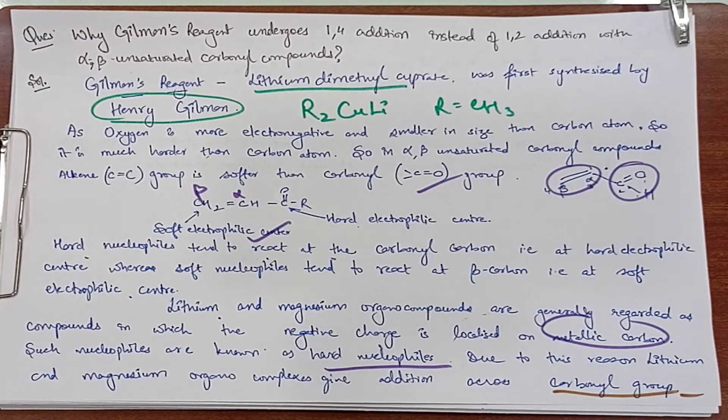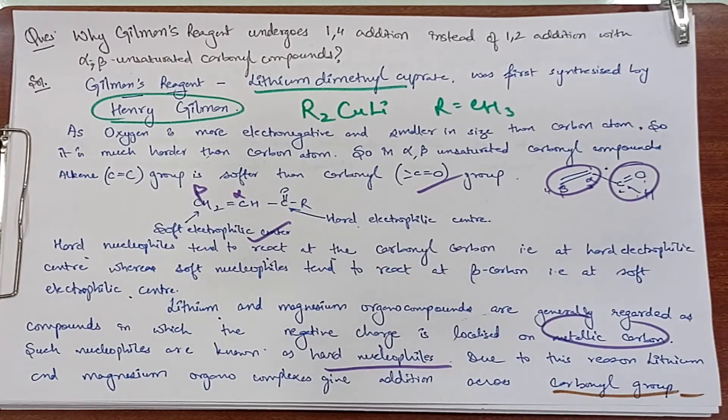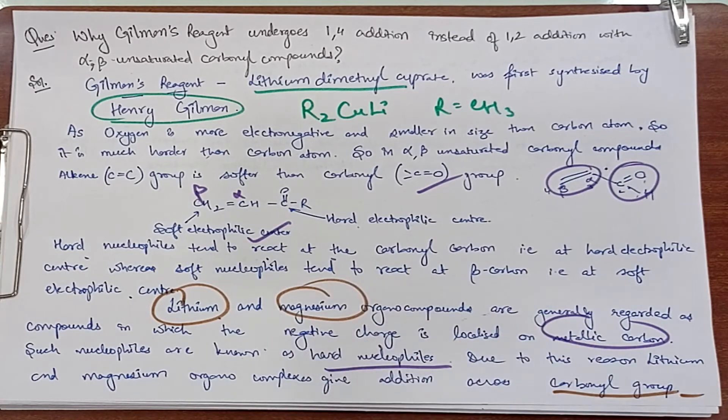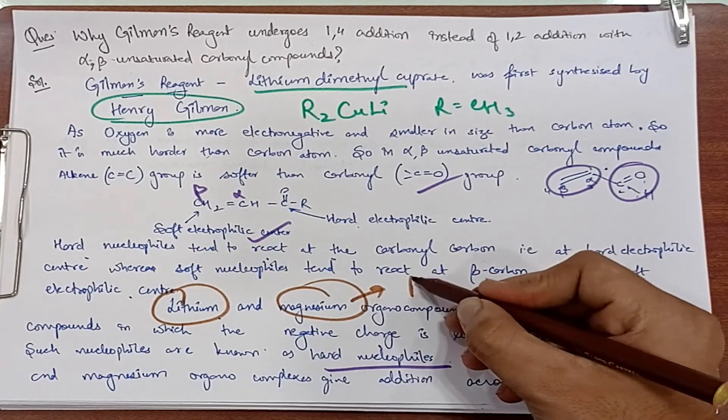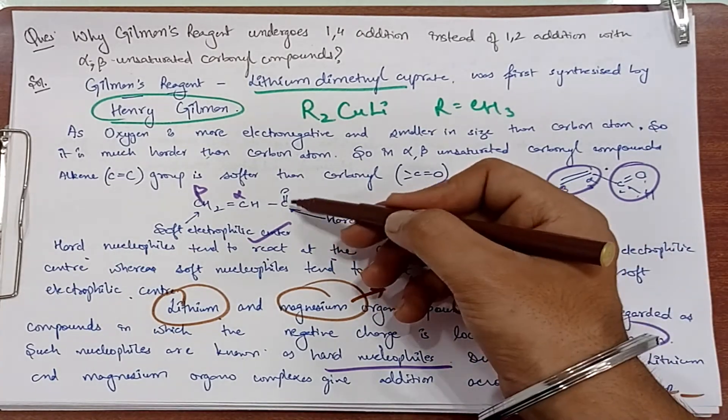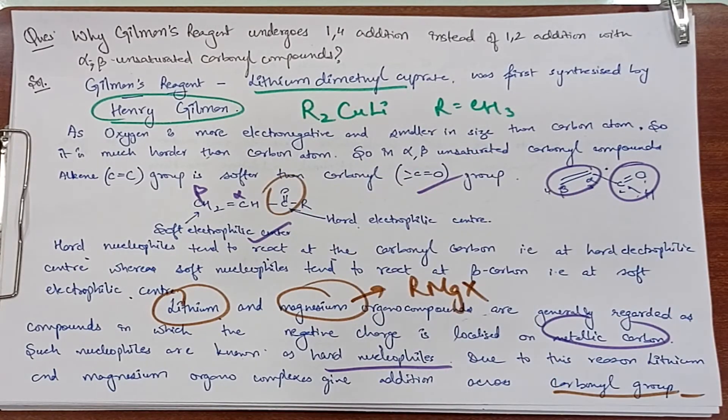Due to this reason, lithium and magnesium organometallic complexes give addition across the carbonyl group. So this is why the carbonyl group undergoes addition, not our alkene group. We don't get addition to the alkene group with lithium and magnesium complexes, but we get it at the carbonyl group. RMgX, that is Grignard reagent. This is the 1,2-addition.